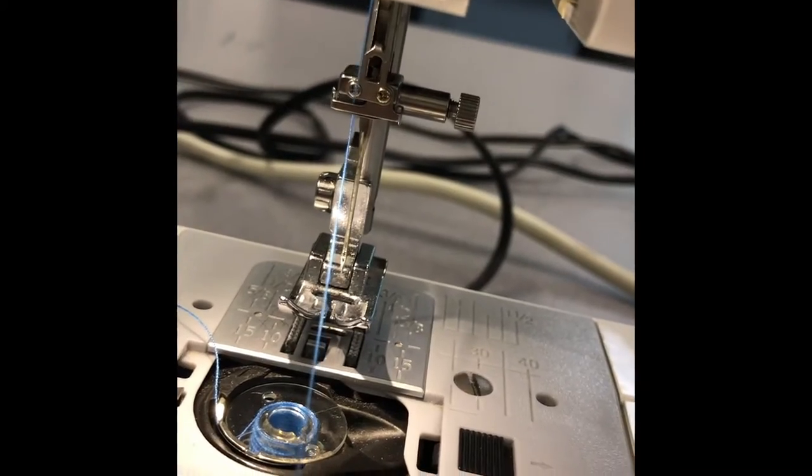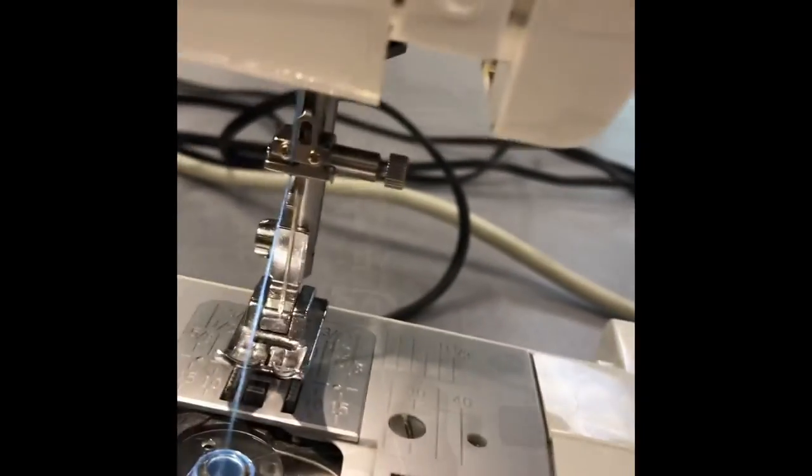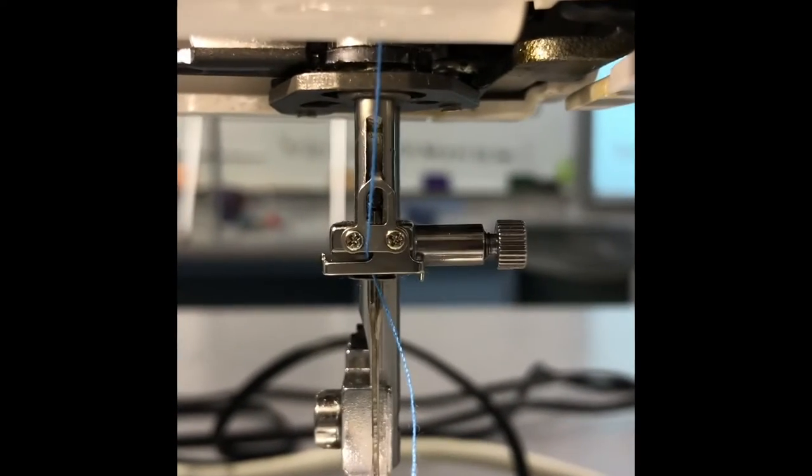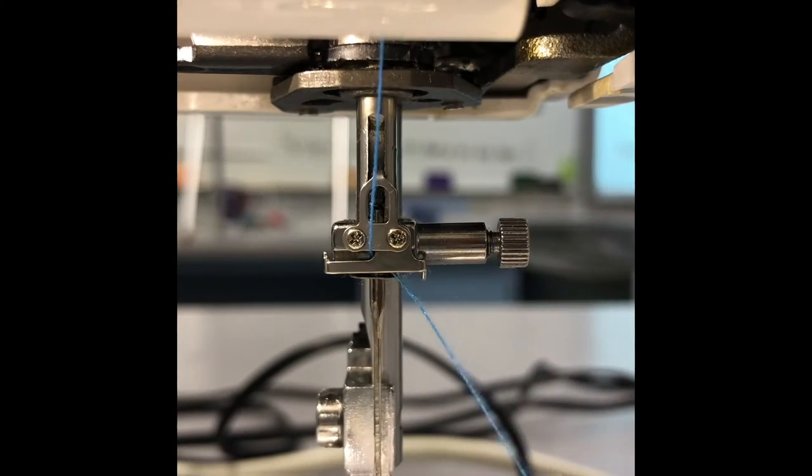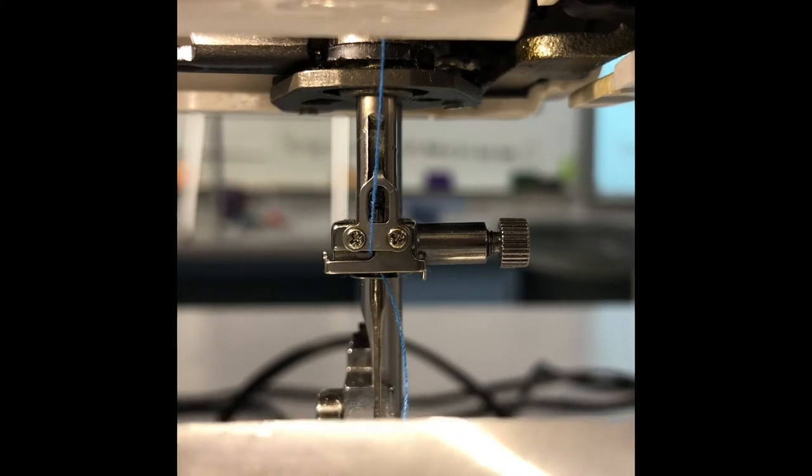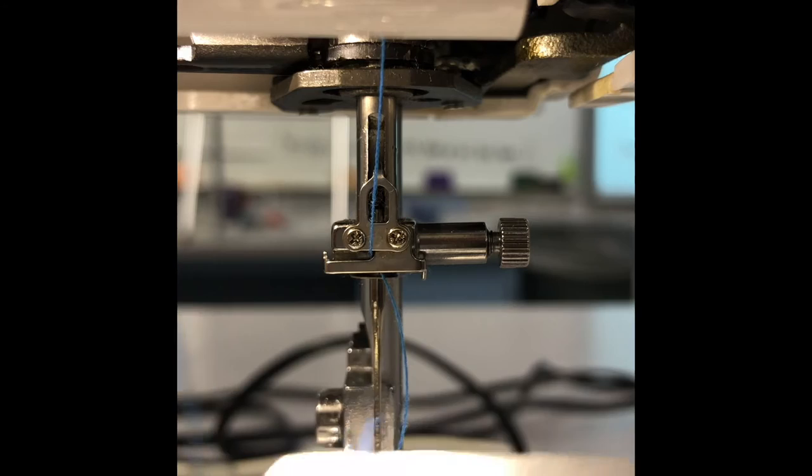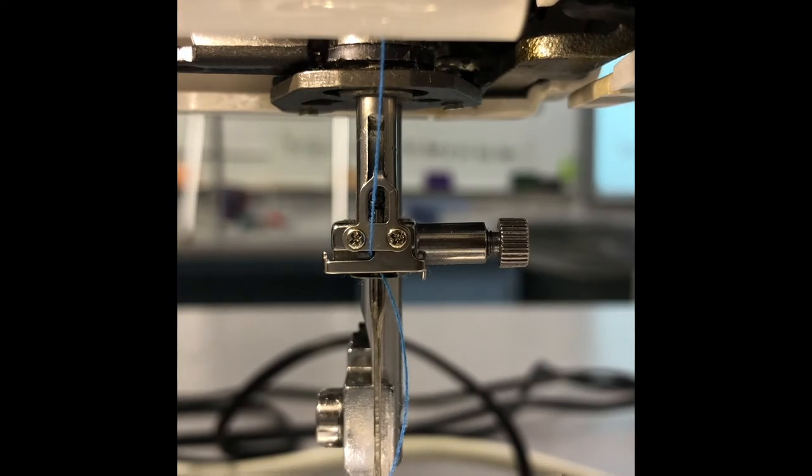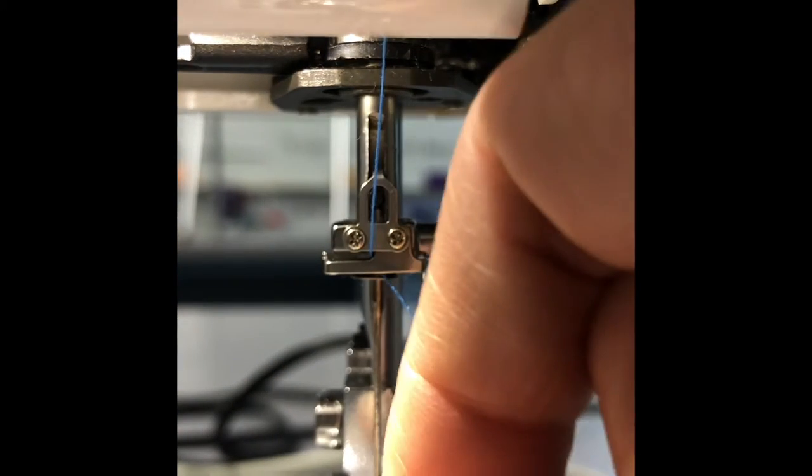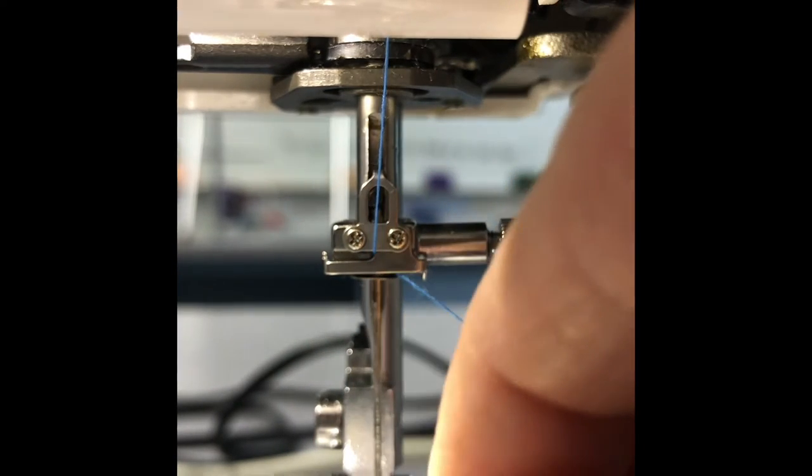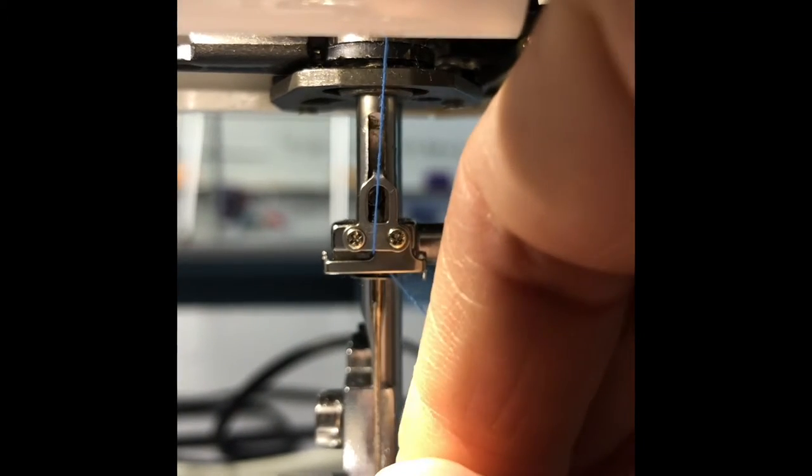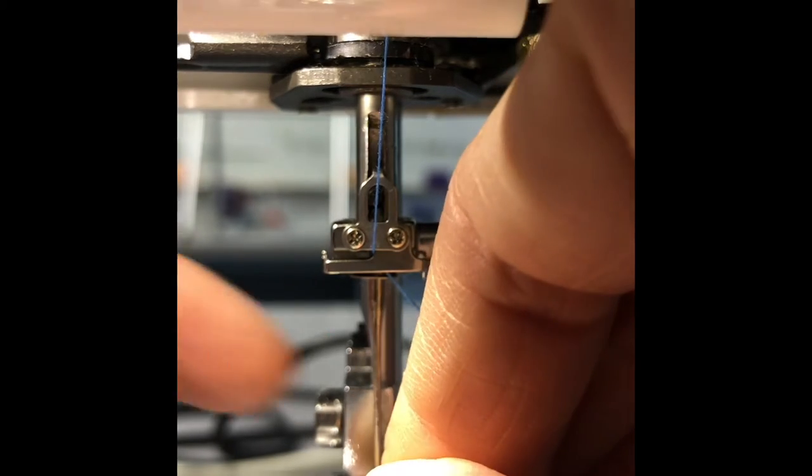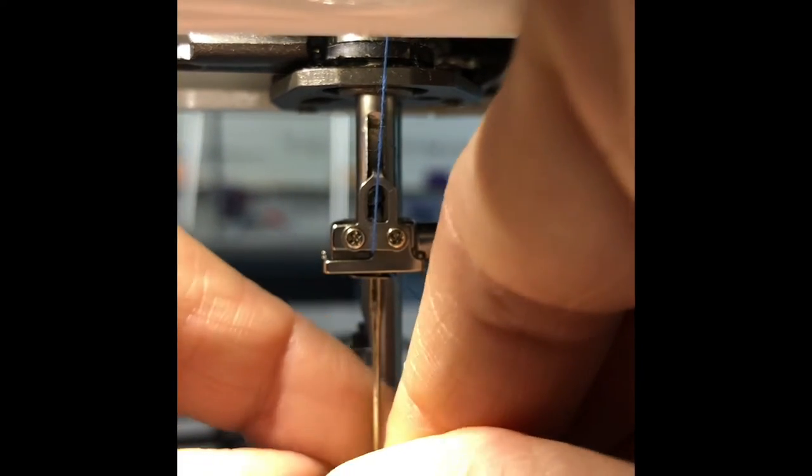The next step is going to be to thread our needle. My best strategy for this is to trim the thread so it's fresh, with no frayed ends. Then you hold it pretty close to the edge of the thread and put it in the eye of the needle. It might take you a couple tries.